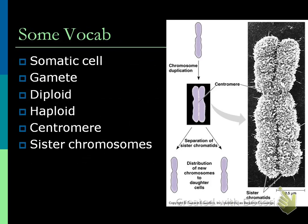Vocabulary: somatic - we've already talked about it, from your head to your toes. Gamete is a sex cell. Diploid - the root word 'di' means two, so diploid means two chromosomes. Haploid means one. So 2N is diploid, and 1N would be haploid - because it's half of 2N. When you go through mitosis, you always want to have a diploid cell. When you go through meiosis, you're going to end up with haploid cells.